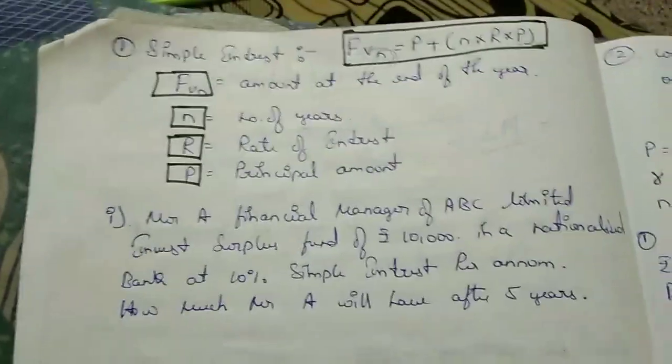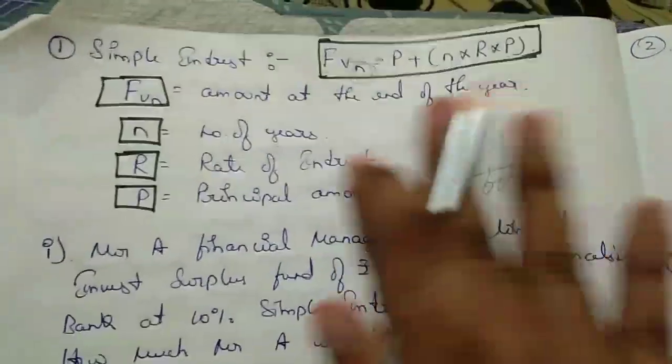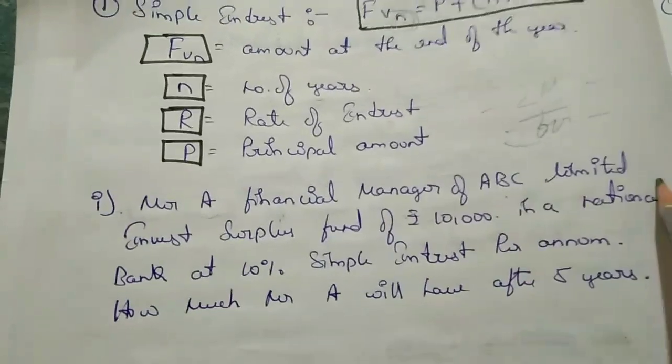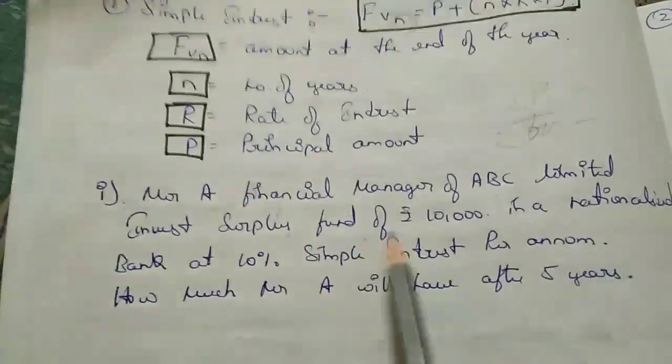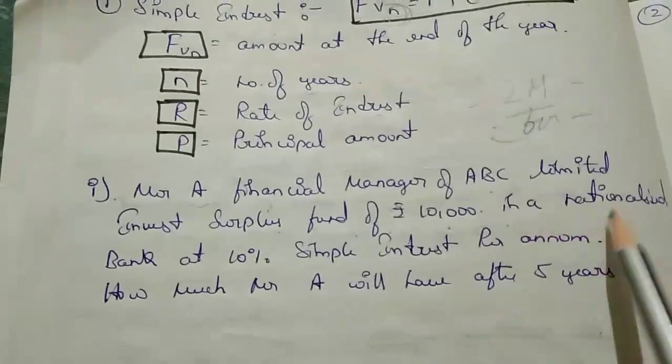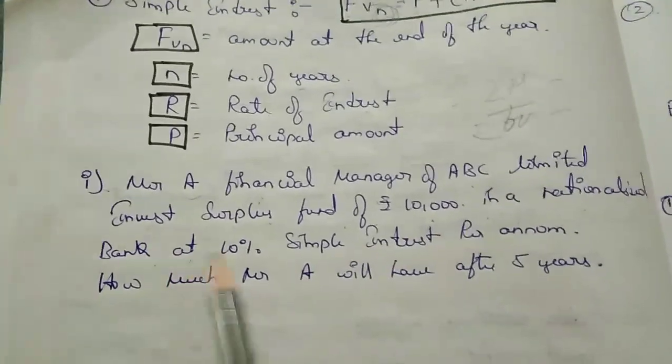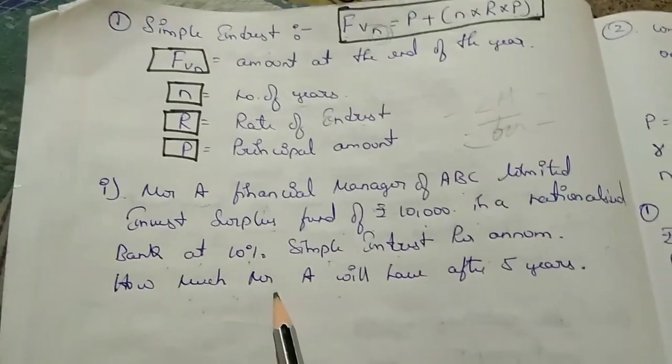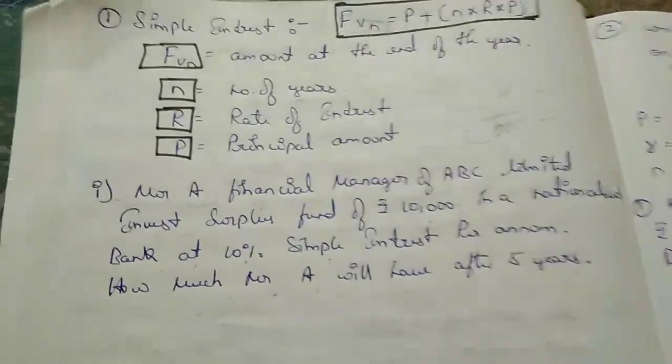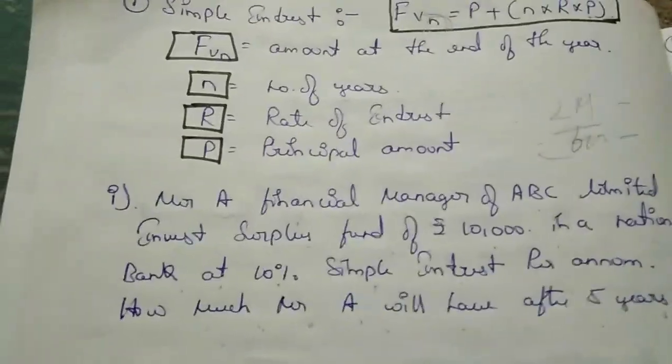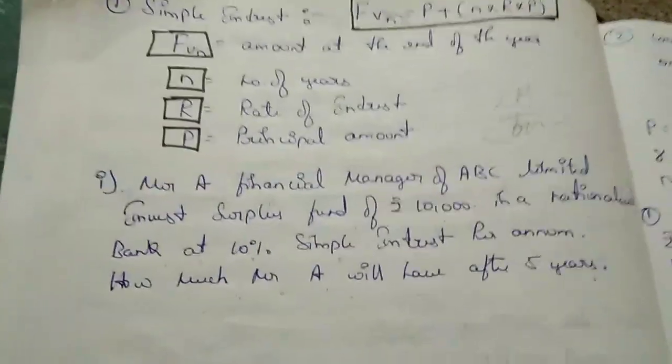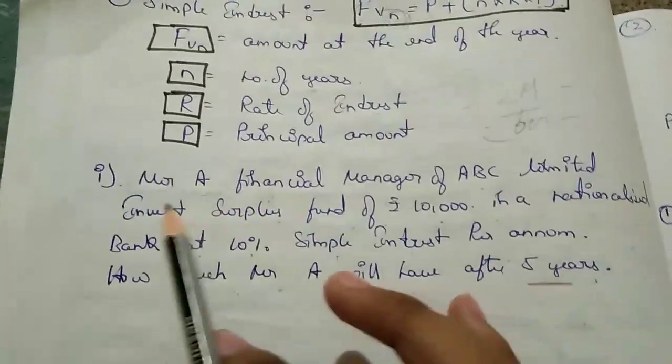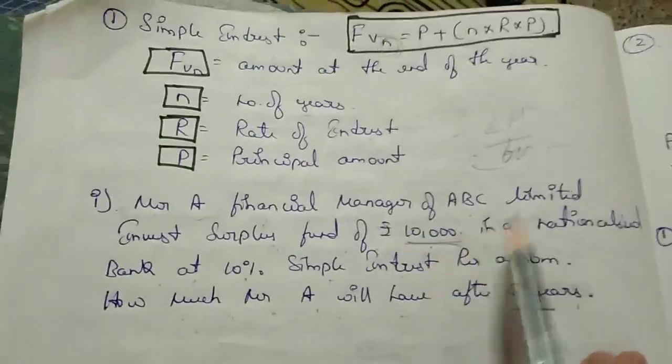Let's know how to do this. Mr. A, financial manager of ABC Limited, invested surplus fund of rupees 10,000 in a nationalized bank at 10% simple interest per annum. How much will A have after five years? So here, time value of money - how much he will have after certain period of time, and the period of time is five years.